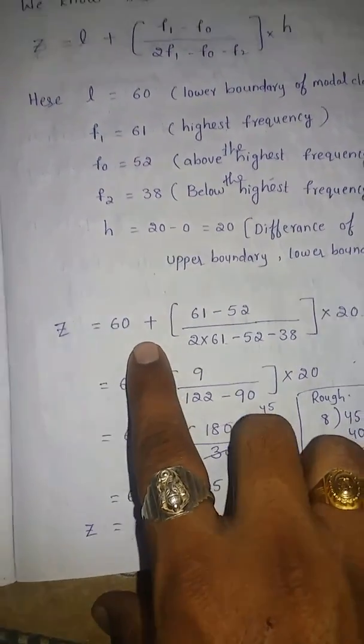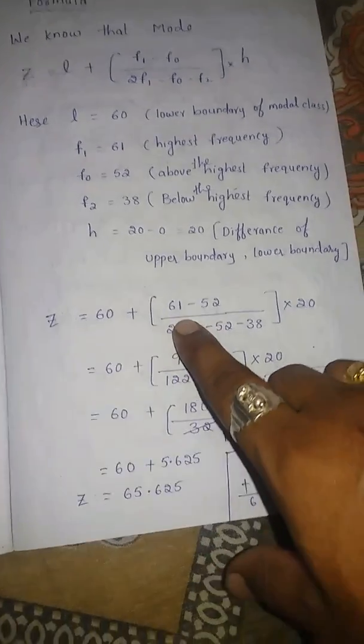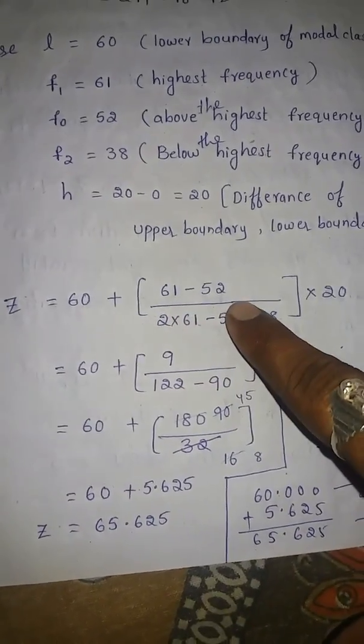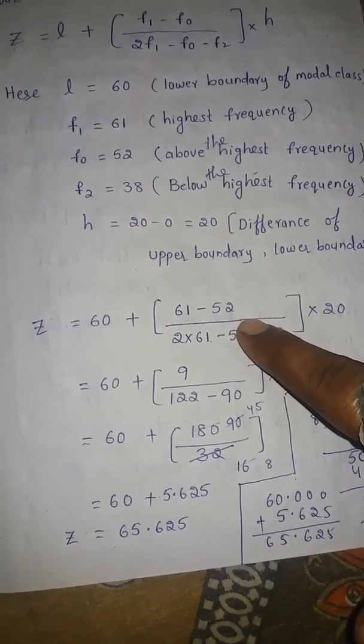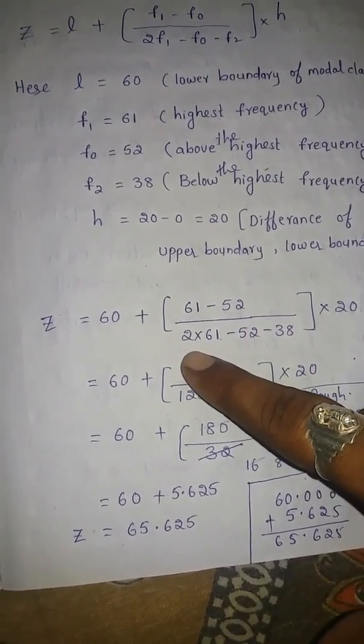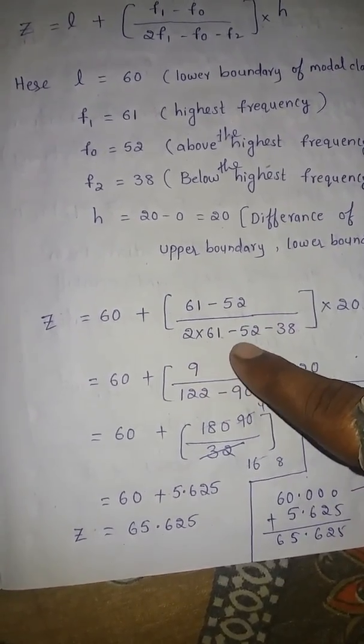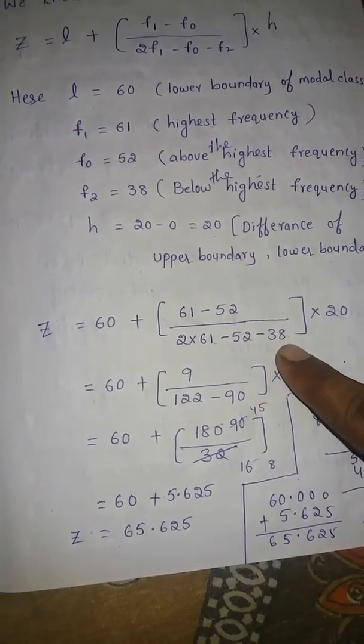Z is equal to 60 plus 61 is the F1 minus 52 is the F0 by 2 times F1, 61 minus F0, 52 minus F2, 38 into h is 20. Substitute all the values, now do the calculation.